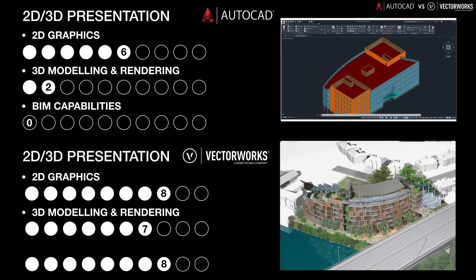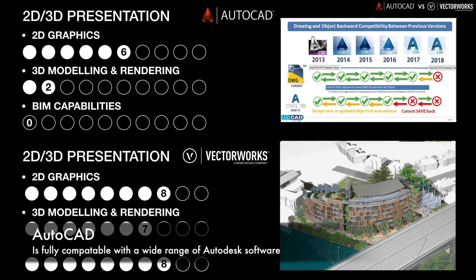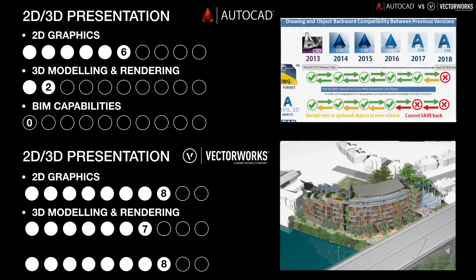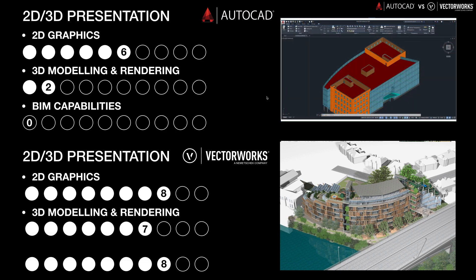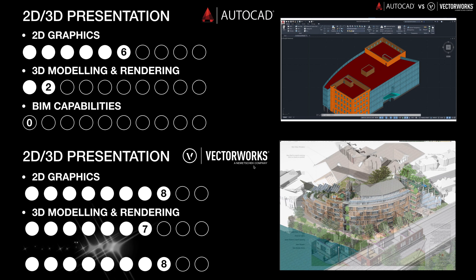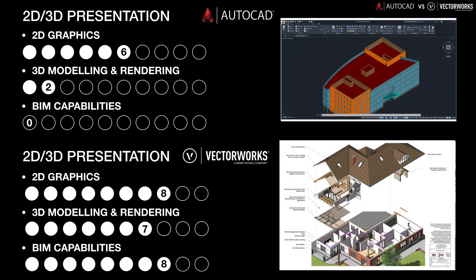For the third part we're looking at BIM capabilities of AutoCAD and Vectorworks. AutoCAD doesn't really have any proper BIM capabilities — it has basic 3D but lacks the information-holding requirements of a BIM application. Autodesk are keen for you to move to AutoCAD Architecture or particularly Revit for BIM workflows. However, Vectorworks comes with a full suite of BIM tools alongside its excellent 2D, 3D modelling, and rendering.